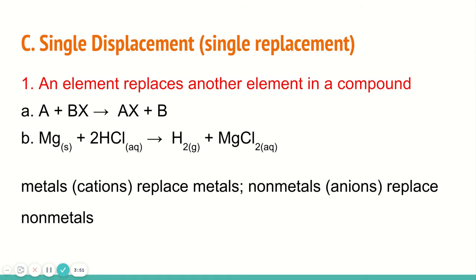Single displacement, also called single replacement, is very interchangeable. I use both of them all the time. In a single replacement, it's when one element is replacing another element in that compound. You can see our general example where we have A plus BX, and then the A replaces the B in the compound. So now we have AX and then B is the element by itself. Here's a real life one where magnesium is going to replace the hydrogen in hydrochloric acid to get magnesium chloride and hydrogen.